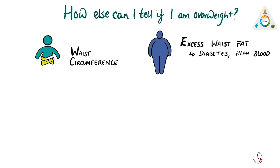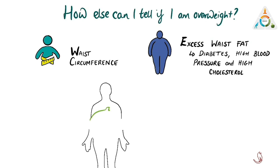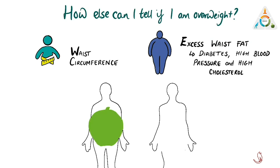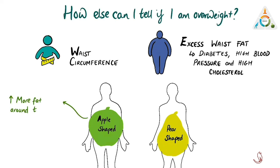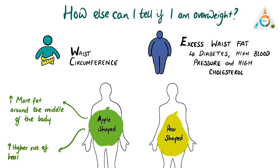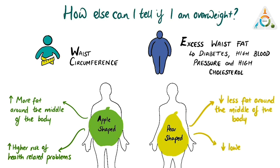It can also contribute to high blood pressure, high cholesterol, and heart disease. A quick way to assess this on yourself is to see whether you are apple-shaped or pear-shaped. Those who are apple-shaped tend to have more fat around the middle, which puts them at a higher risk of weight-related issues. Those who are more pear-shaped have less fat around the middle and are considered to be at a lower risk of weight-related health problems.